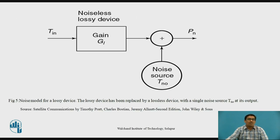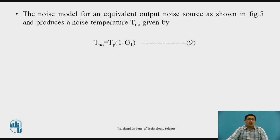Figure 5 shows the noise model for a lossy device. The lossy device has been replaced by a lossless device with a single noise source TIN at its input, with output noise source TNO and PN. The noise temperature for an equivalent output noise source is given by TNO = Tp × (1 − G1). This is equation number 9.